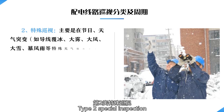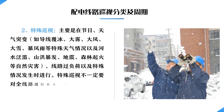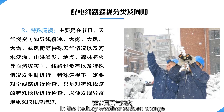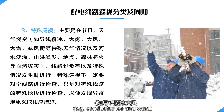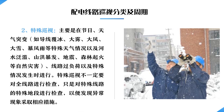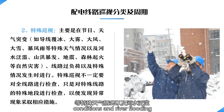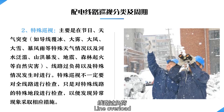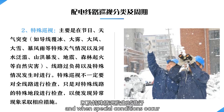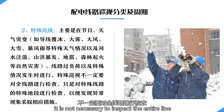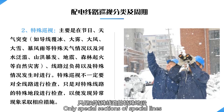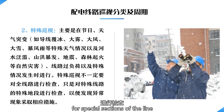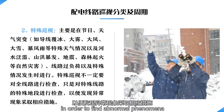Type 2 is special inspection. Special inspection is mainly carried out during holidays, after sudden weather changes — such as conductor ice and wind — and other special weather conditions, as well as during river flooding, natural disasters such as forest fires, line overloads, and other special conditions. It is not necessary to inspect the entire line; only special sections are inspected in order to find abnormal phenomena and take appropriate measures.